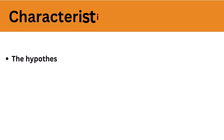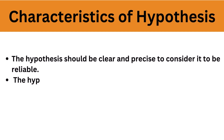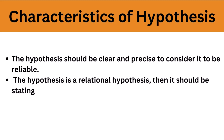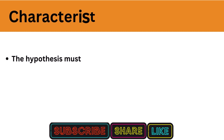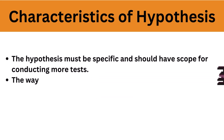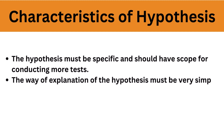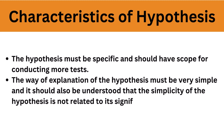Some characteristics of the hypothesis. One, the hypothesis should be clear and precise to consider it to be reliable. Two, if the hypothesis is a relational hypothesis, then it should be stating the relationship between variables. Three, the hypothesis must be specific and should have scope for conducting more tests. Four, the way of explanation of the hypothesis must be very simple, and it should also be understood that the simplicity of the hypothesis is not related to its significance.